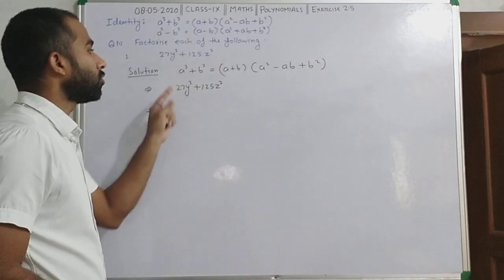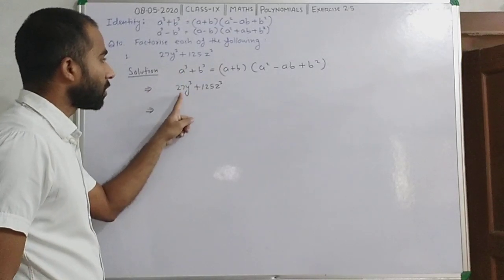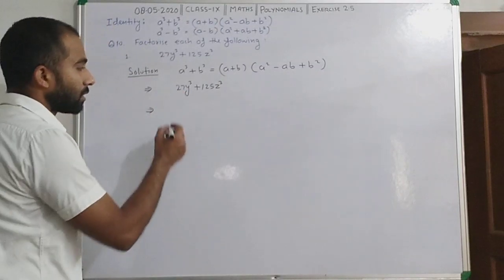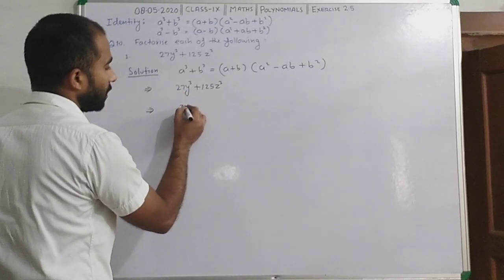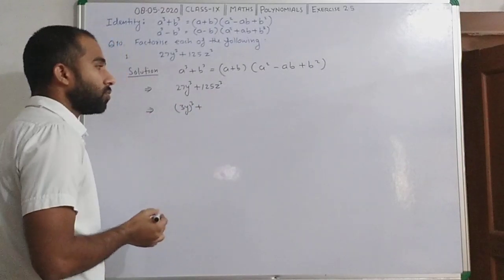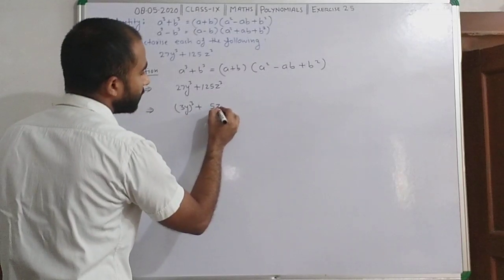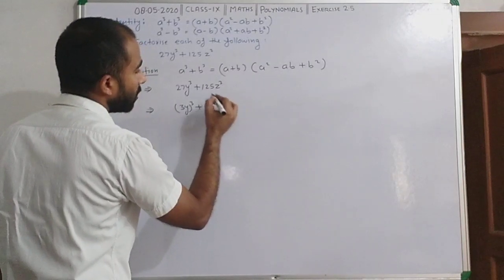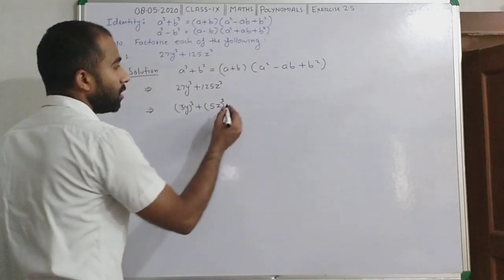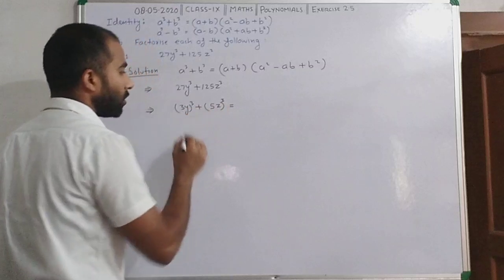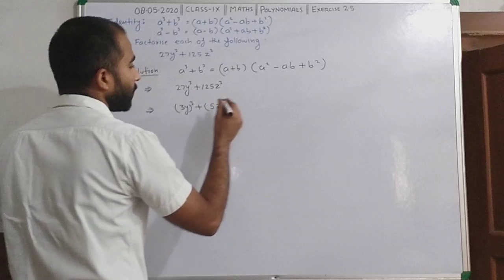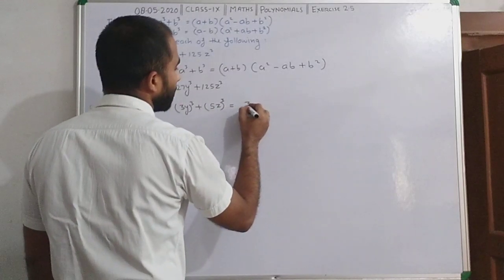उस पूरी value पर cube है, नीचे जो question है उसमें y पर cube है, तो whole cube बनाने के लिए 27 को हम 3y का whole cube लिख सकते हैं, plus 125 का cube root 5 होगा, तो 5z का cube. तो आप देख सकते हैं हमें a cube और b cube के form में यह मिल गया, अब जहां पर a है...